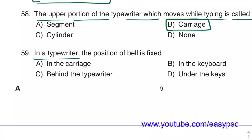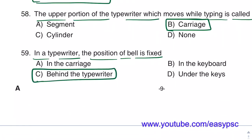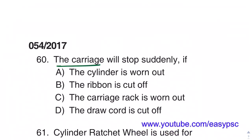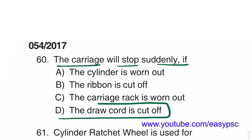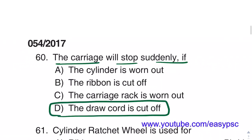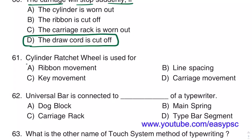In a typewriter, the position of the bell is fixed behind the typewriter. The draw cord is cut off on the carriage button. The cylinder ratchet wheel is used for line spacing.